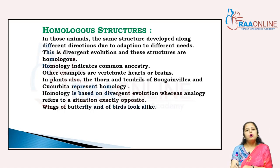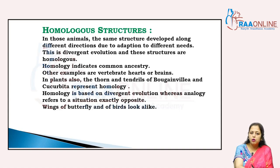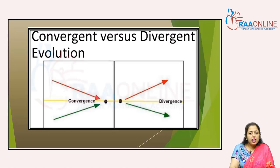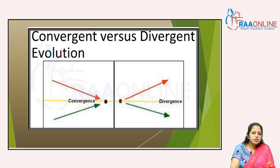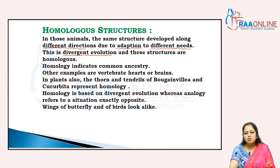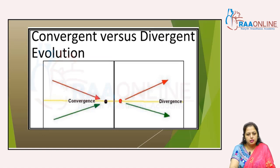In those animals, the same structures develop along different directions due to adaptation to different needs. This is called divergent evolution. The origin is the same, but it shows divergence — that is called divergent evolution. These structures are called homologous.